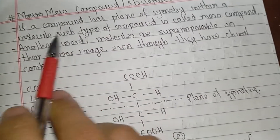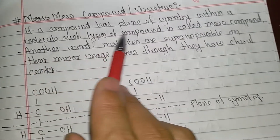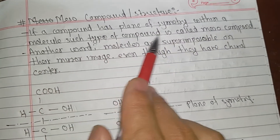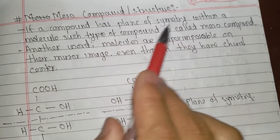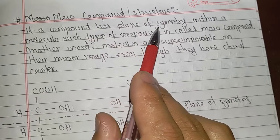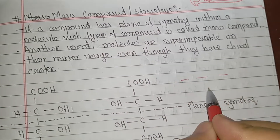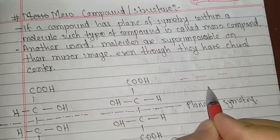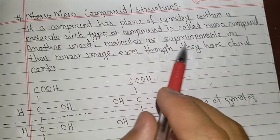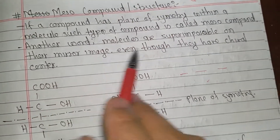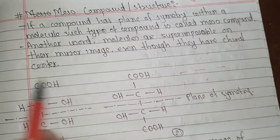If a compound has a plane of symmetry within a molecule, such a compound is called a meso compound. In other words, meso molecules are superimposable on their mirror image even though they have a chiral center.